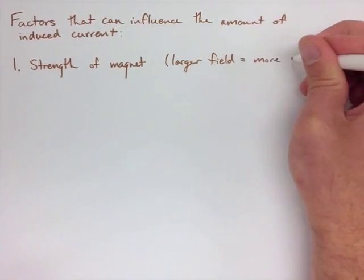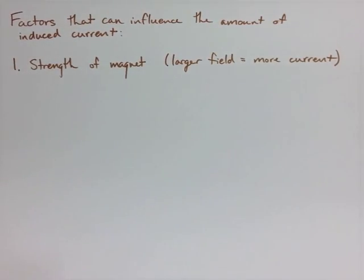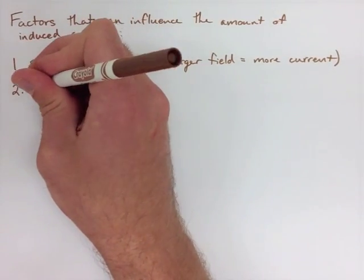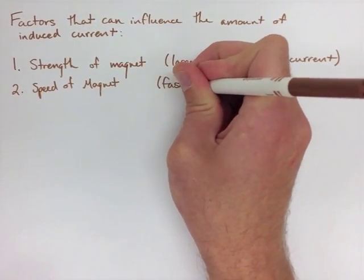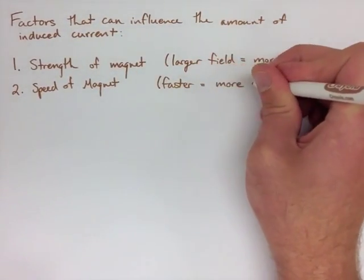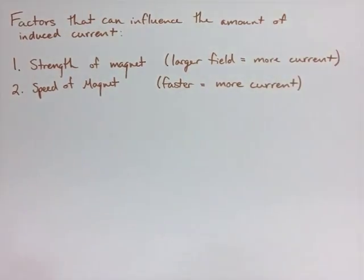If we move the magnet in slowly, we're not going to create a lot of current, and it's not going to oppose the motion that much. And the last is going to be the number of windings in that solenoid.